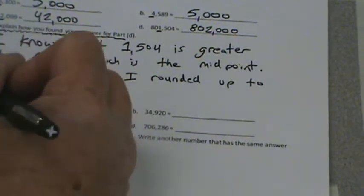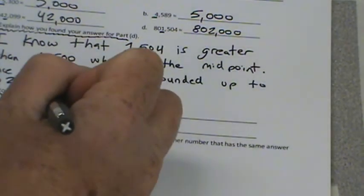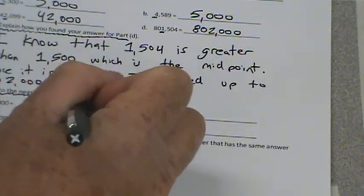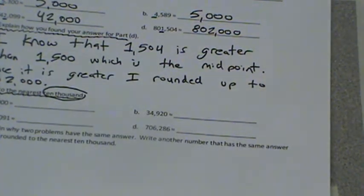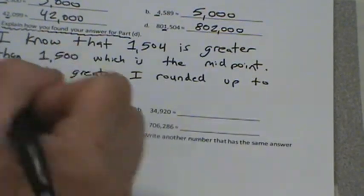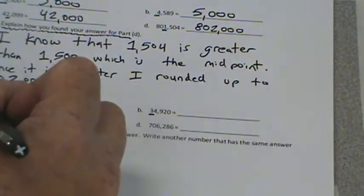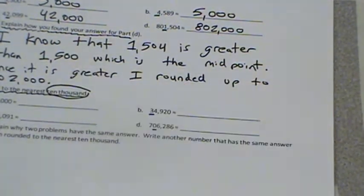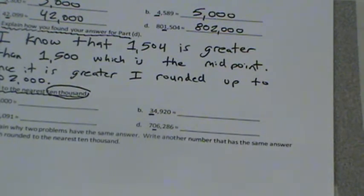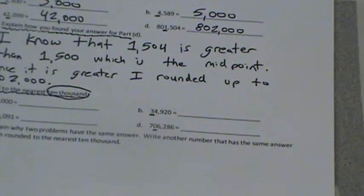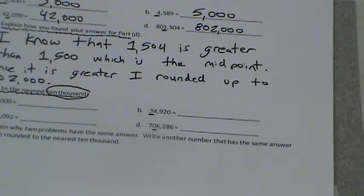We're going to continue on. It says round to the nearest 10,000. I'm going to circle 10,000. Let's just go ahead and underline all the 10,000 place. So we're going to be rounding up or down. These numbers are going to change. Let's get the endpoints.